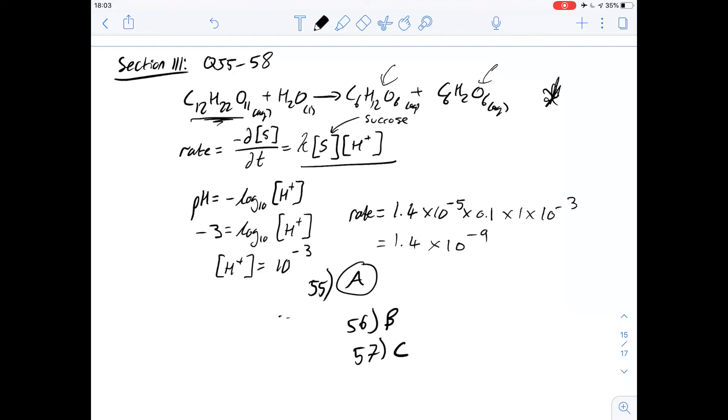Then finally, for 58 it says, although water appears as a reactant in the stoichiometric equation, its concentration does not appear in the rate equation. And then it asks why. So let's go through the different answers. Part A says water is automatically included in the hydrogen ion concentration. Of course that's not true.